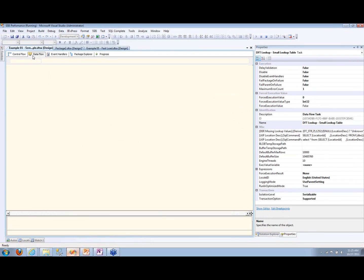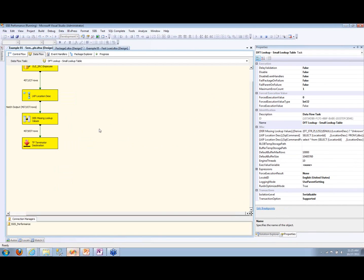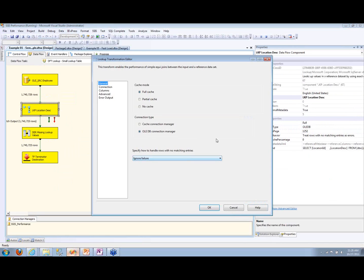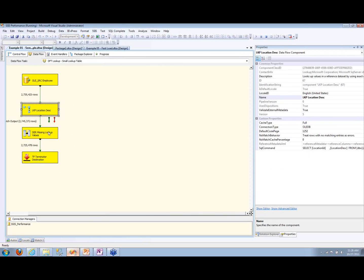Similar situation, only this is a better technique. Instead of telling the lookup to redirect the row to a no lookup output, I'm telling it to ignore the failure. And this is really a better technique, particularly as I mentioned in the fact loads. Because typically in the fact loads, you're going to have multiple, several dimension keys that you're going to look up.